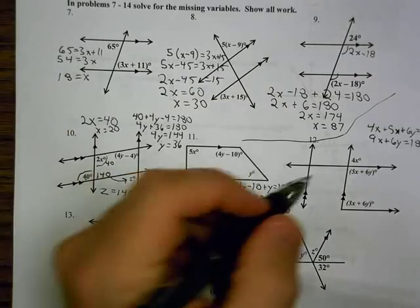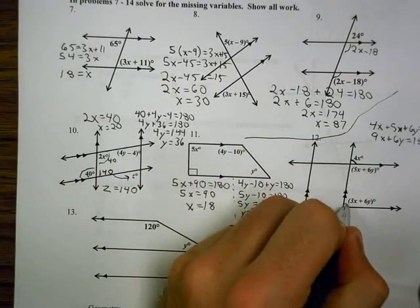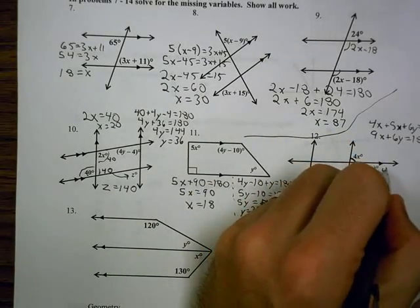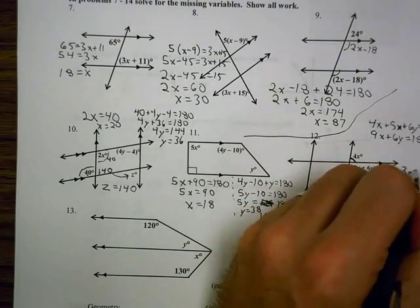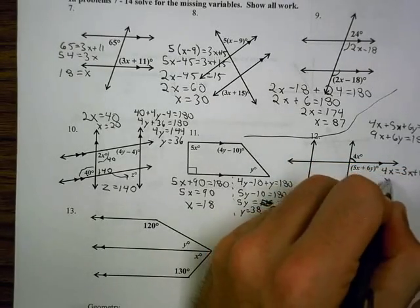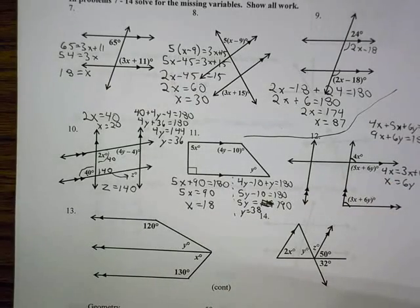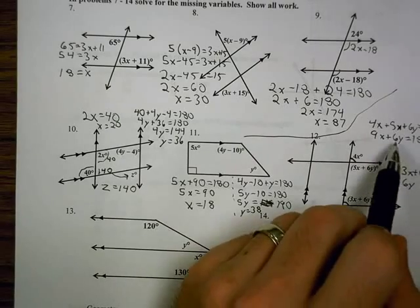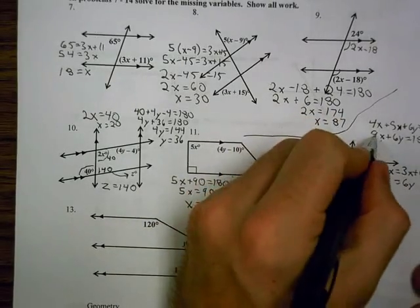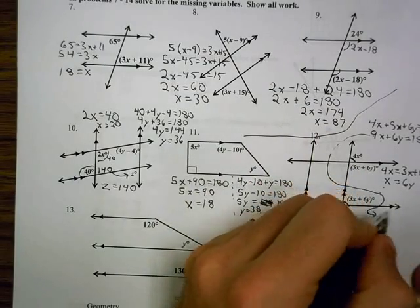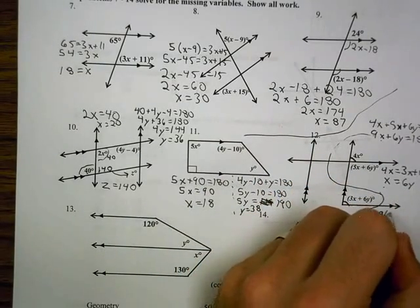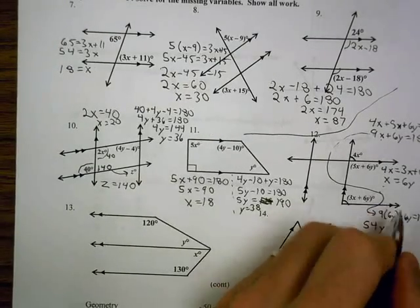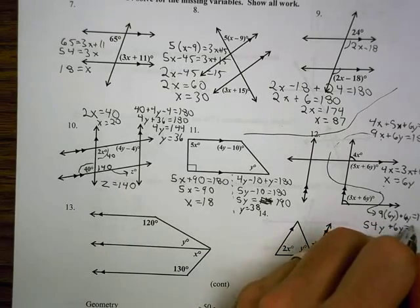So let's go back and get another equation. I know that 4x is equal to 3x plus 6y because they are corresponding. So I'm going to say 4x equals 3x plus 6y. That tells me that x is equal to 6y just by subtracting 3x from both sides. But now I can take the x and replace it with 6y, or substitution, in my equation. And that gives me 9 times 6y plus 6y equals 180.